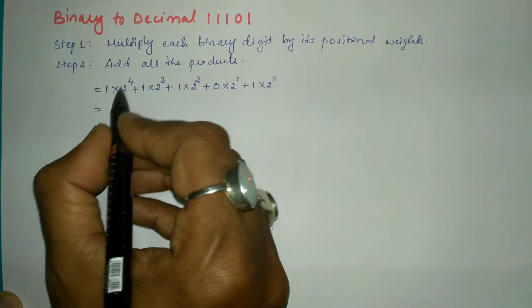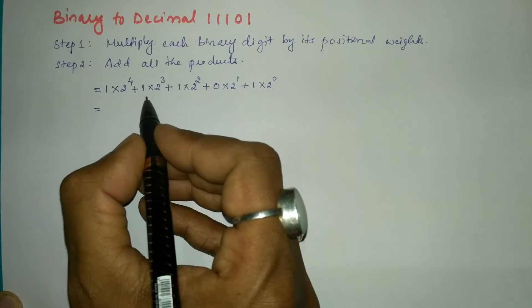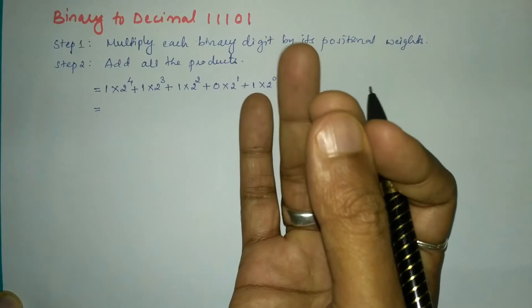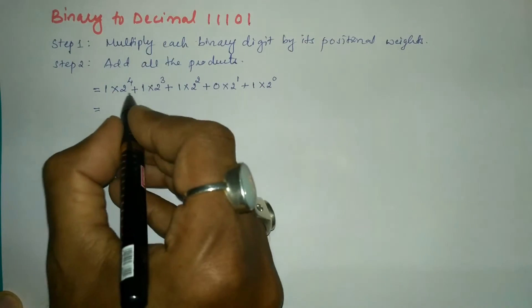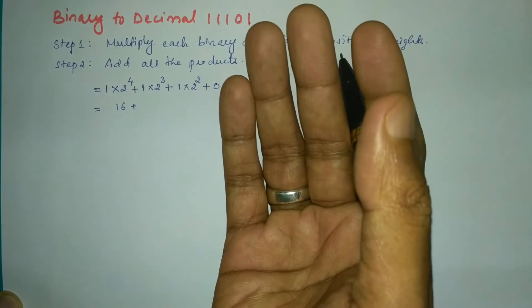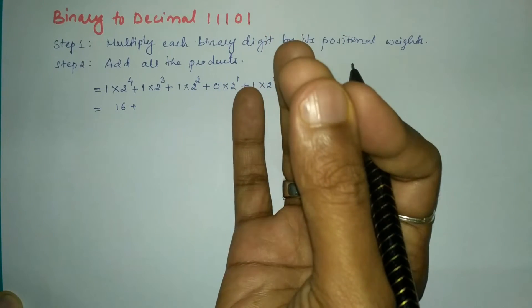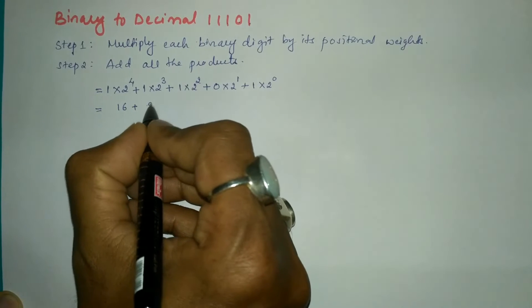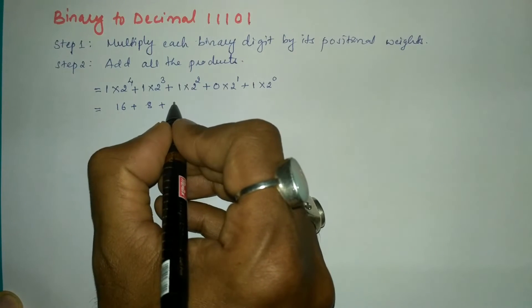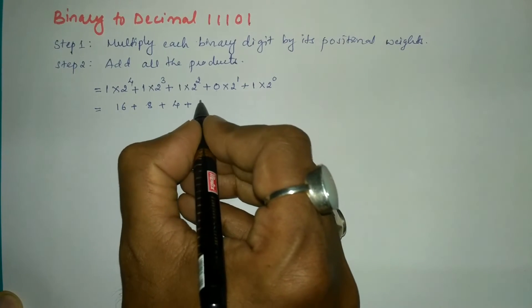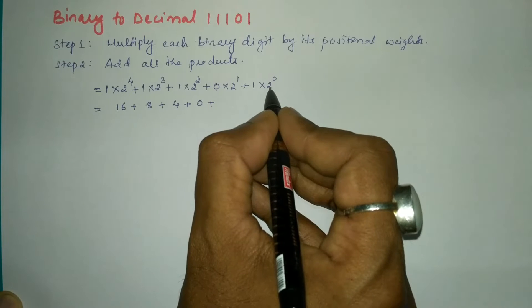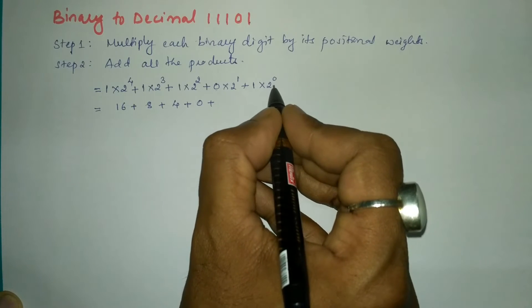Now I have to further simplify. 2^4 means multiplying 2 four times: 2, 4, 8, 16. So 1 × 16 = 16. 2^3 means multiplying 2 three times: 2, 4, 8. So 1 × 8 = 8. 2^2 = 4, so 1 × 4 = 4. 0 × anything = 0. 2^0 = 1, since anything raised to the power 0 equals 1, so 1 × 1 = 1.